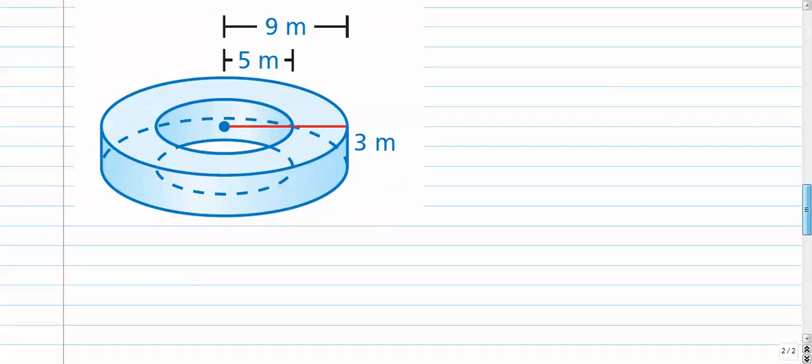Number 2 is a little bit more of an interesting case. We did one like this in class, but it's more interesting, right? So far we've been adding everything together. But now, what we're looking at here is a cylinder, a big cylinder, that has radius 9, and a small cylinder.